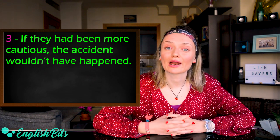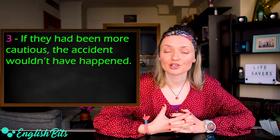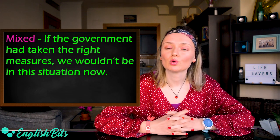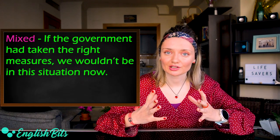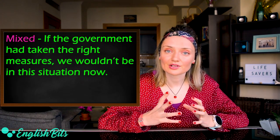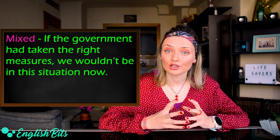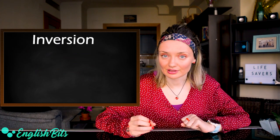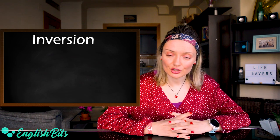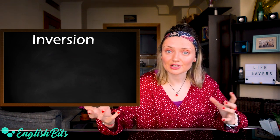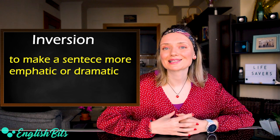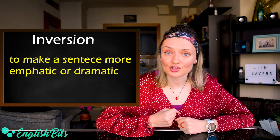And one example for a mixed conditional: if the government had taken the right measures, we wouldn't be in this situation now. Let's continue — the fourth grammar structure that I recommend using is inversion. Basically it means that you invert the subject and the verb to make a sentence more emphatic and dramatic.